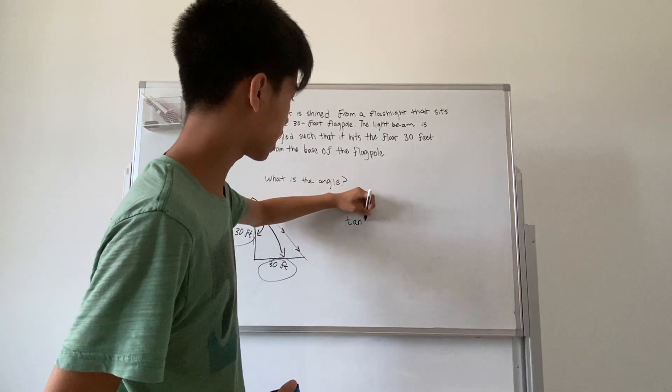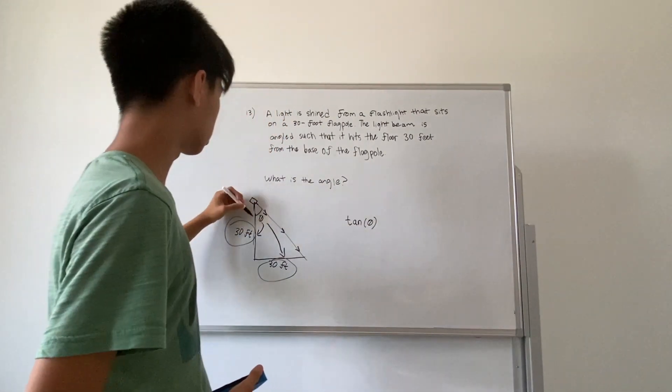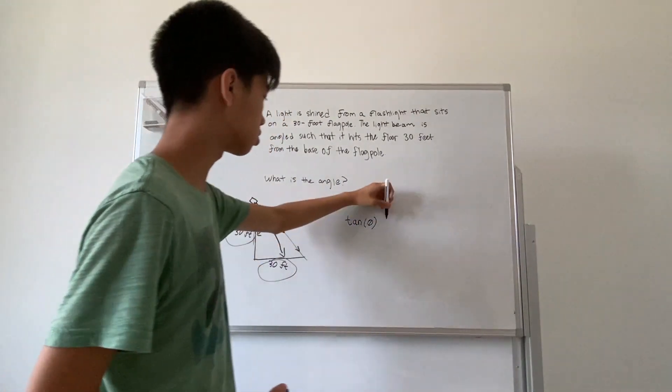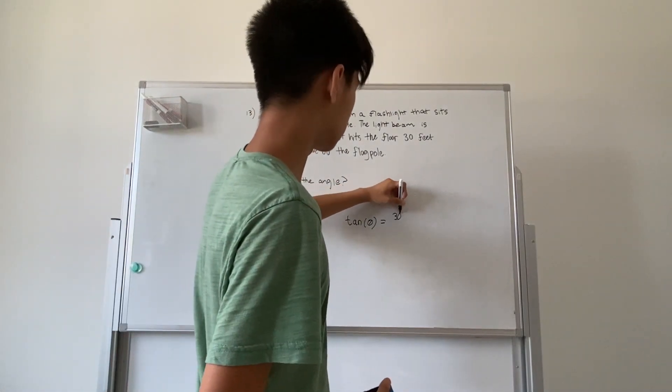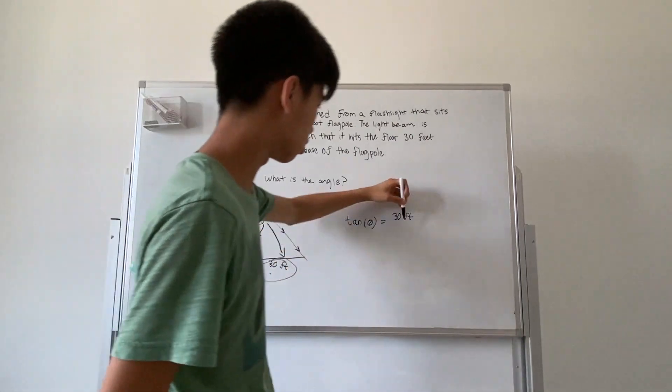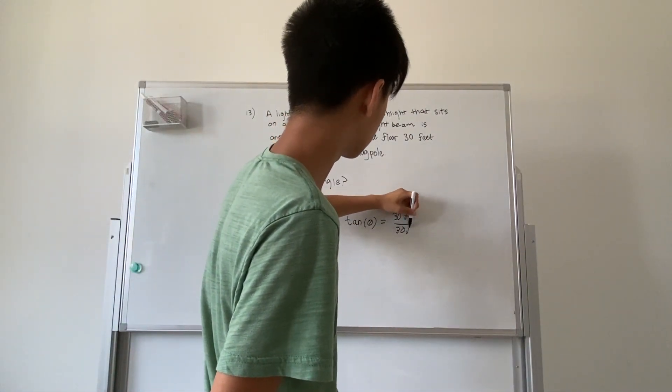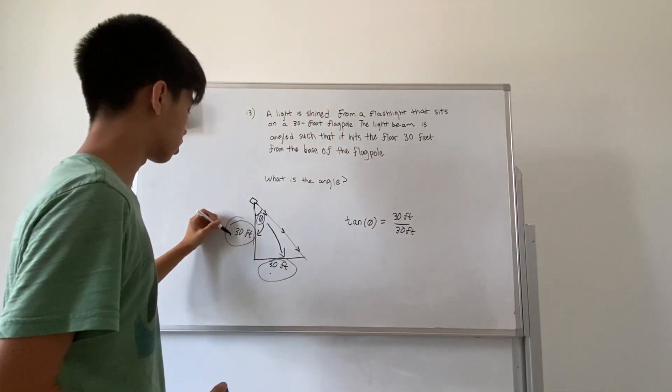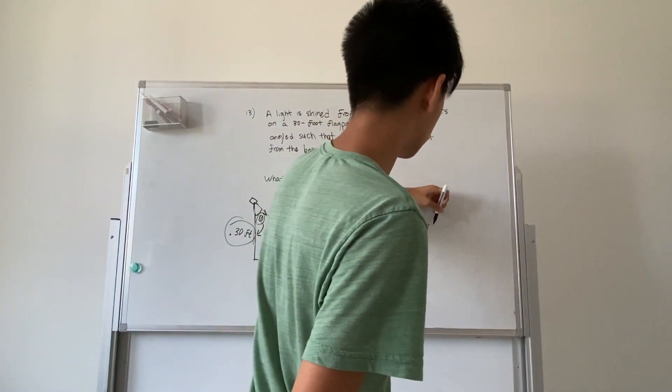That means tangent of theta is equal to 30 feet over 30 feet, which equals 1.